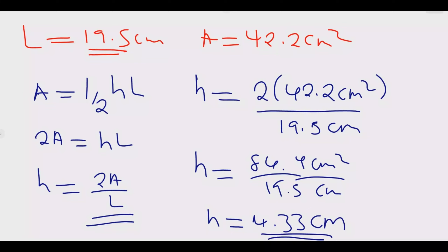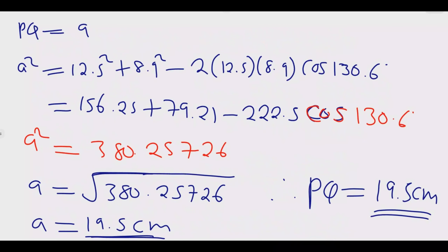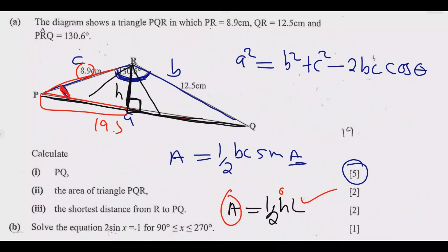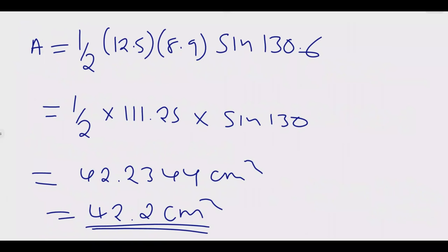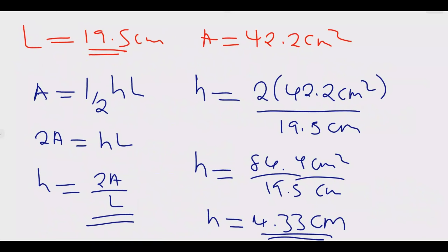Once you do that, you are good to go and get the marks for this question — 2 marks. Now we answer question (b): solve the equation 2 sine x equals 1, for the interval 90 degrees less than or equal to x, less than or equal to 270 degrees.